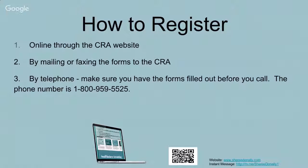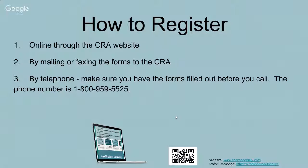You can also register by telephone, but make sure that you have the forms filled out before you call. The number is 1-800-959-5525. It's really important to have those forms filled out because the operator you'll be talking to will want to know all of that information. It'll go a lot smoother if you have the forms already printed out and filled out so you can let them know what you want done.